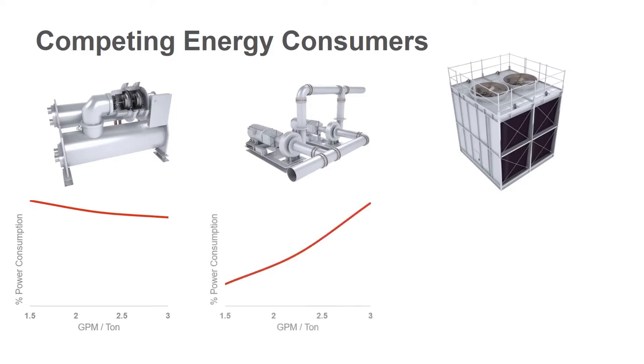As we move over to the pumps, the pumps are going to closely follow the affinity laws minus the tower's static lift. So as we go from high flow to low flow, you can see the power drops dramatically, and that's by almost a cube of the flow rate.